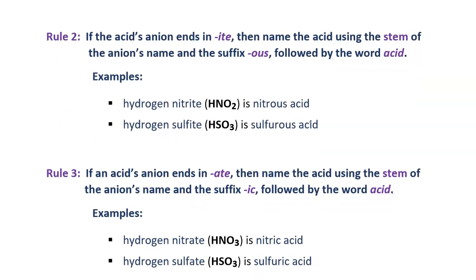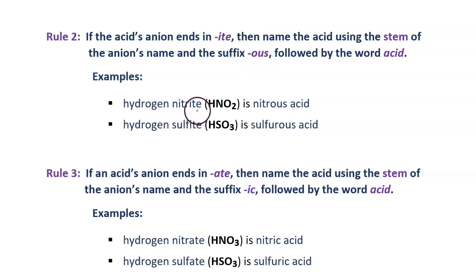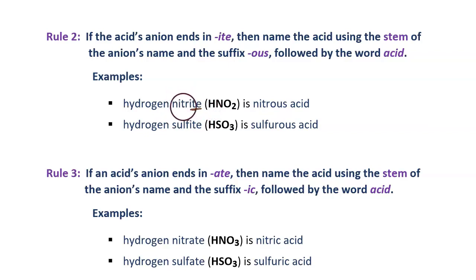Rule number two: if the acid's anion ends in "-ite", then name the acid using the stem of the anion's name and the suffix "-ous", followed by the word acid. For example, hydrogen nitrite has the formula HNO2. That acid ends in "-ite", so rule number two applies. The stem of nitrite is the "nitr" part, and then ending in "-ous", it becomes nitrous acid.